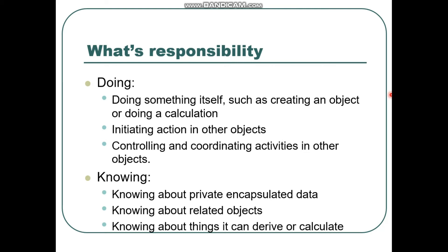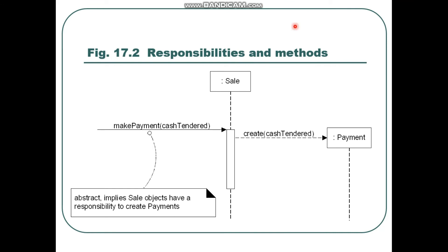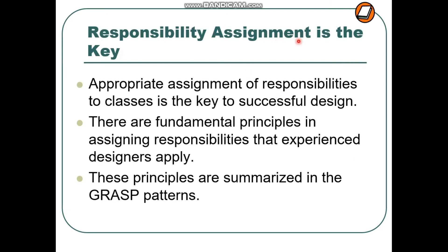There is a figure telling us about responsibilities and methods. 'Make payment' — having an attribute cash tender — implies that sale objects have a responsibility to create payments. The message implies that objects related to sale have the responsibility to create a payment object and implement it. This is the 'doing' type of responsibility — creating a payment object.